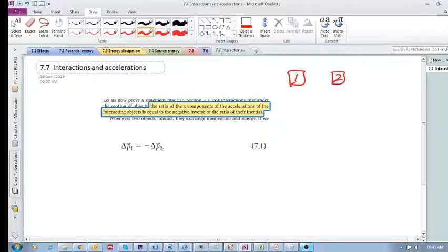...is equal to the negative inverse of the ratio of their inertias. So something to this effect: acceleration of one divided by acceleration of two, that's the ratio of the accelerations, is equal to the negative inverse of the ratio of their inertias, m2 over m1. Now we just want to quickly show you how we get here, how do we get to this statement.